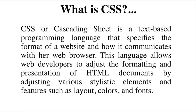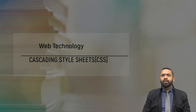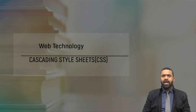CSS, or Cascading Style Sheets, is a text-based programming language that specifies the format of a website and how it communicates with other web browsers. This language allows web developers to adjust the formatting and presentation of HTML documents by adjusting various stylistic elements and features such as layouts, colors, and fonts. Web designers can customize these to make applications feature-rich, and stylistic elements are controlled by web designers using CSS.